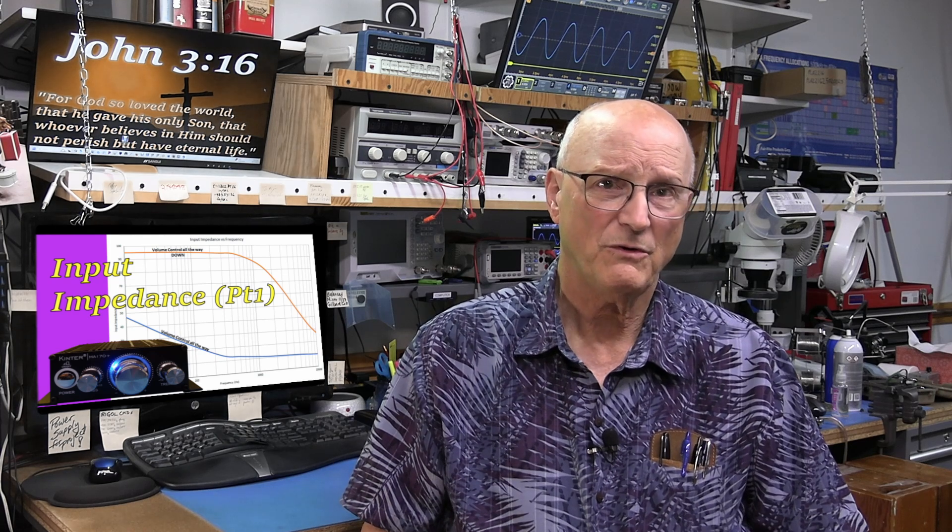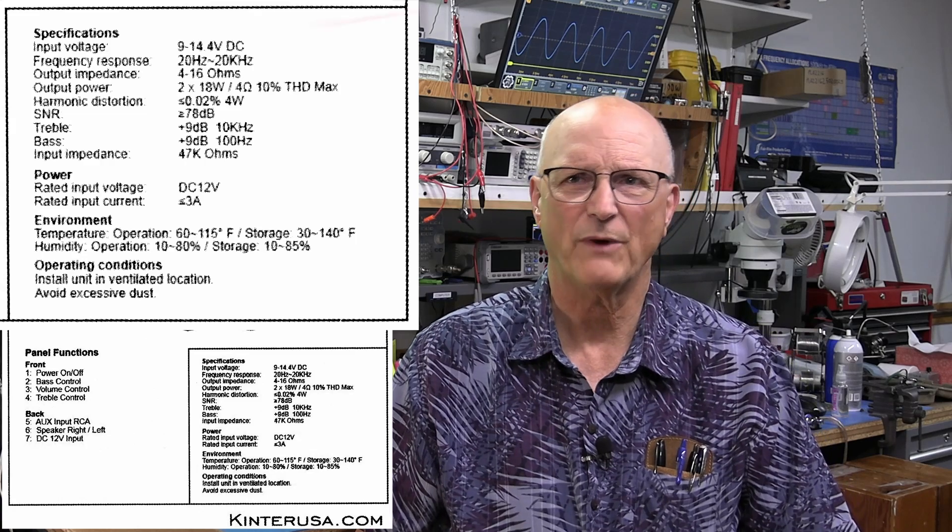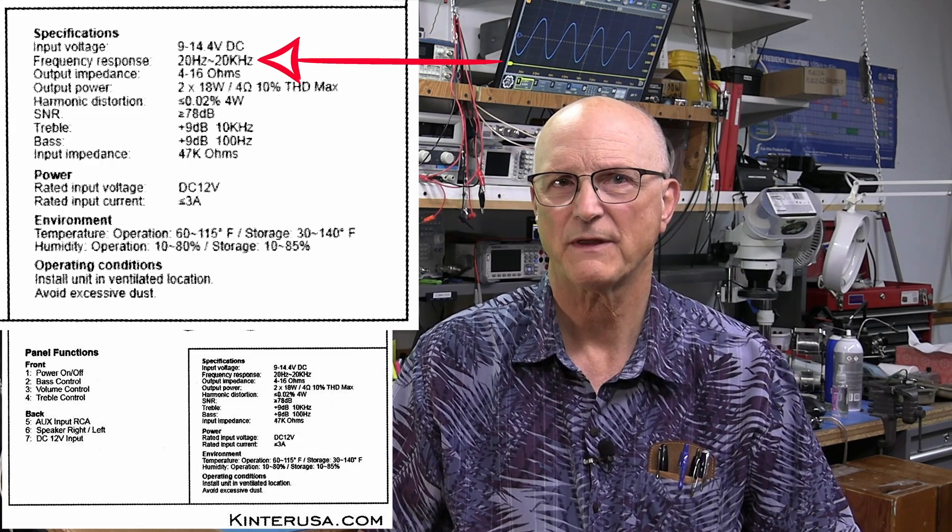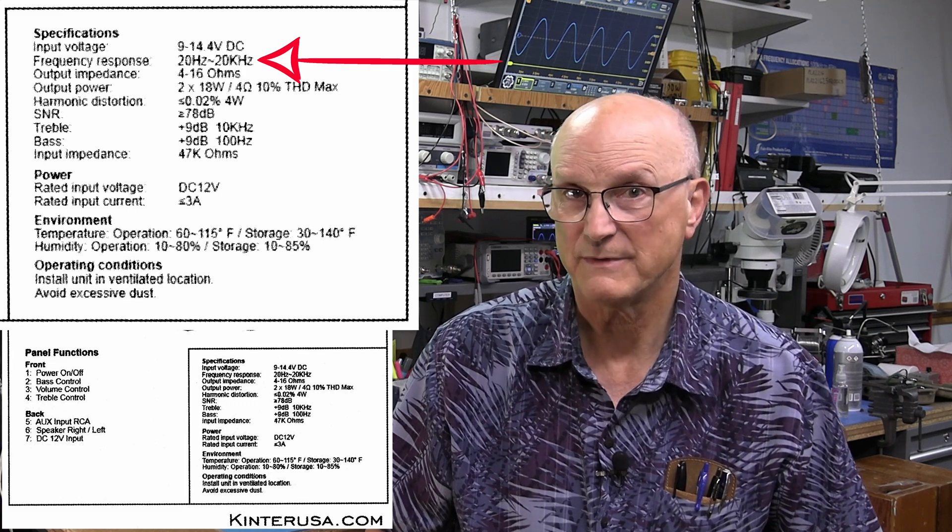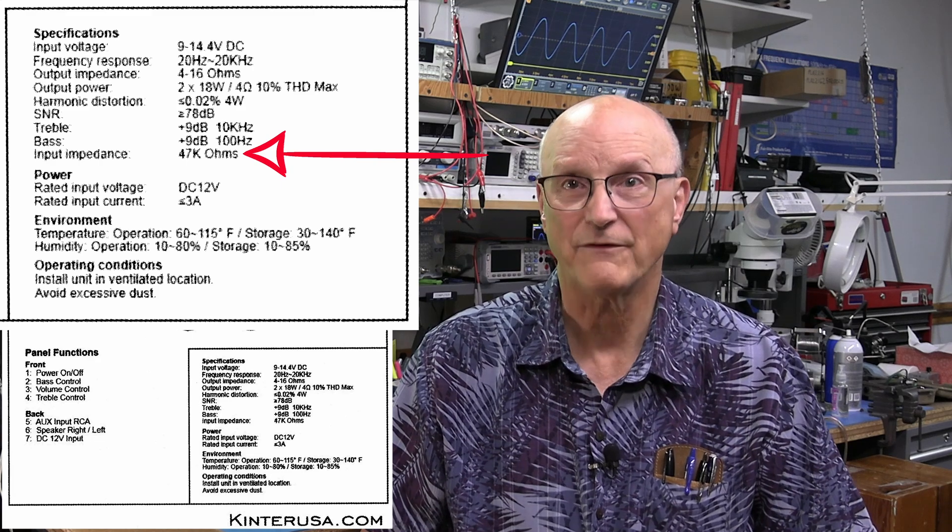For this video, I'm going to be testing the input impedance of this Kinter MAI 70 plus 2 channel stereo amplifier. The specifications provided with my amplifier tell me that it is designed around 20 Hz to 20 kHz frequency response. It also tells me that I should expect an input impedance of 47 kohms.